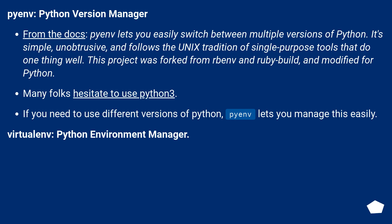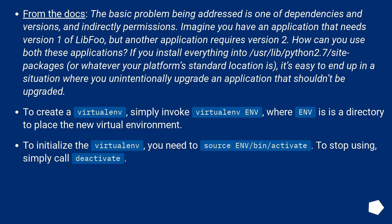VirtualEnv is a Python environment manager. From the docs: the basic problem being addressed is one of dependencies and versions, and indirectly permissions. Imagine you have an application that needs version 1 of LibFoo, but another application requires version 2. How can you use both these applications? If you install everything into /usr/lib or whatever your platform's standard location is, it's easy to end up in a situation where you unintentionally upgrade an application that shouldn't be upgraded. To create a virtualenv, simply invoke: virtualenv env, where env is the directory to place the new virtual environment. To initialize it, run: source env/bin/activate. To stop using it, simply call deactivate.